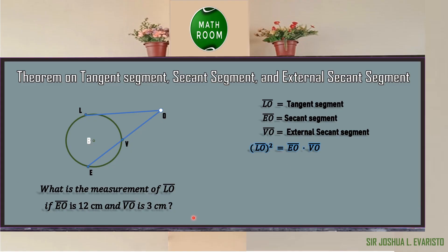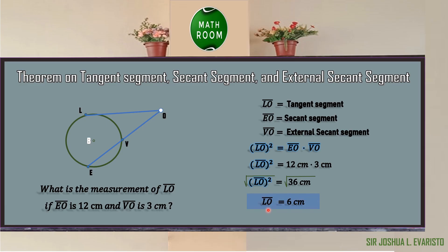For example, find segment LO if segment EO is 12 cm and segment VO is 3 cm. By substitution: LO² = 12 × 3 = 36. Taking the square root of both sides: LO = √36 = 6 cm. Therefore, segment LO is equal to 6 cm.